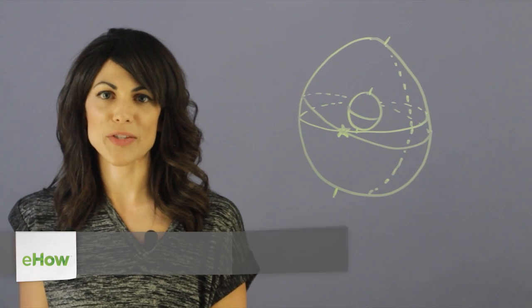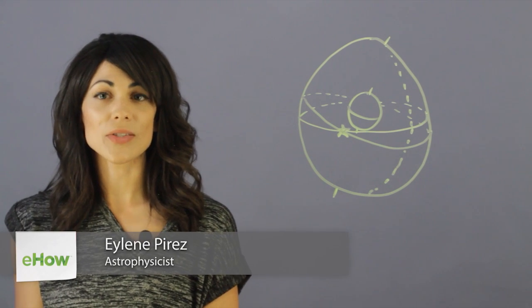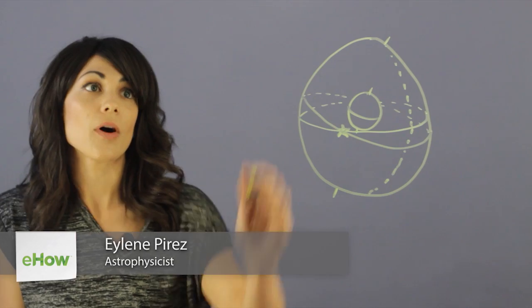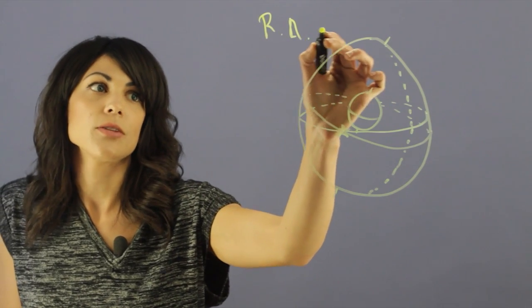Hi, my name is Aileen Perez and I'm an astrophysicist and this is What is RA in Astronomy? So RA stands for Right Ascension.